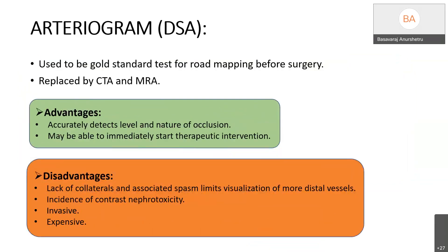The arteriogram used to be the gold standard for road mapping before surgery but has now been replaced by CT angiogram. Advantages are that it accurately detects the level and nature of occlusion and can also be used as a therapeutic intervention in the same setting. Disadvantages include lack of collaterals and associated spasm limiting distal visualization, risk of contrast nephrotoxicity, and it is invasive and expensive.